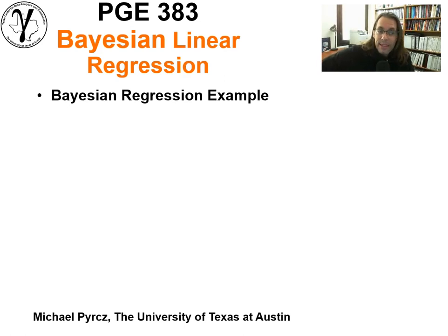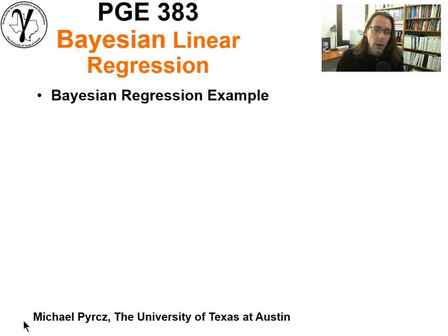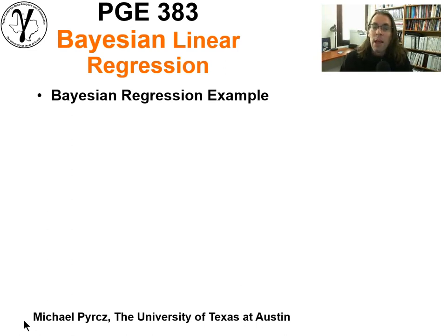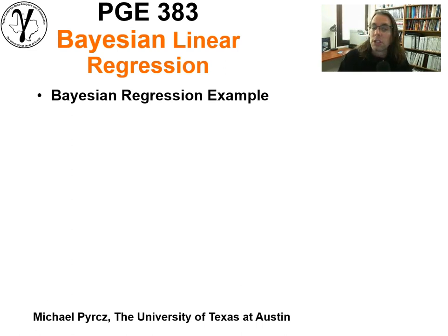Let's go ahead and finish up this discussion about Bayesian linear regression. We had a couple of lectures before where we introduced the fundamental concepts and made some comparisons to the frequentist approach. Then we had a short lecture on Markov chain Monte Carlo methods, because we can't solve for the model parameters in the regular way — there's no closed-form solution for continuous predictor features, so we have to sample the posterior distribution.